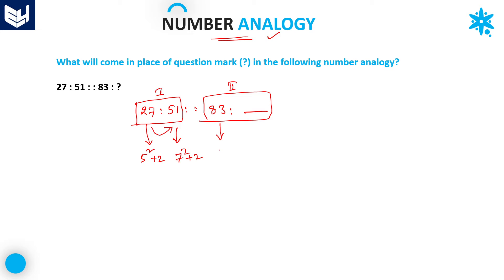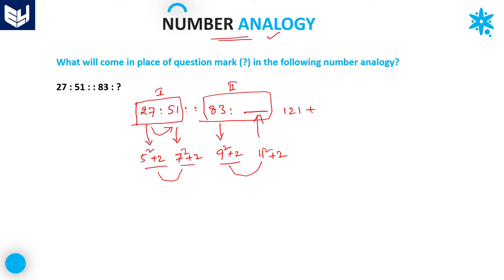The first number in the second group is 83. We can write 83 as 9 squared plus 2. If you observe all these numbers — 5 squared plus 2, 7 squared plus 2, 9 squared plus 2 — the bases 5, 7, 9 are consecutive odd numbers. Therefore, the missing number must follow 11 squared plus 2. As we know, 11 squared equals 121, and 121 plus 2 equals 123.